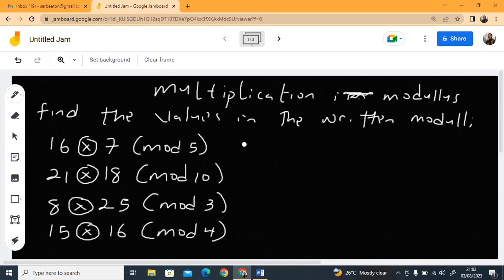Now it's straightforward. What you are going to do is multiply these numbers together. So 16 times 7 will give us 112. So it is 112 mod 5.